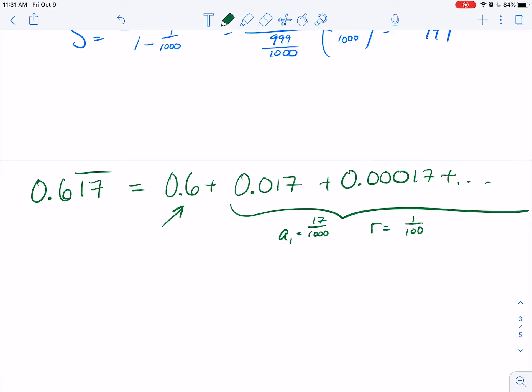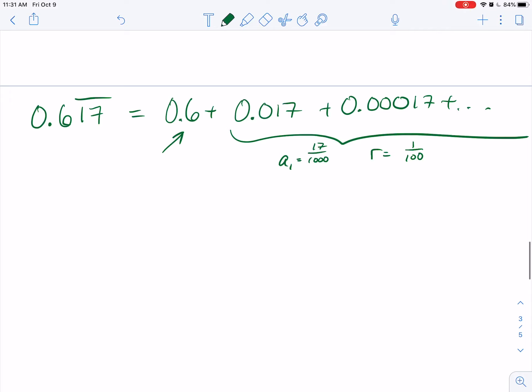This is 3 fifths plus the sum of a sub 1, which is 17 over 1000, divided by 1 minus 1 over 100.